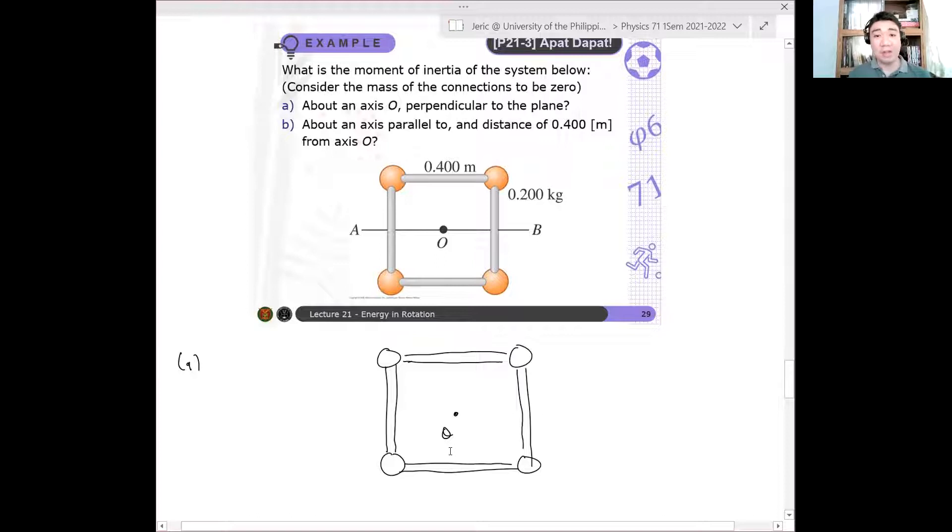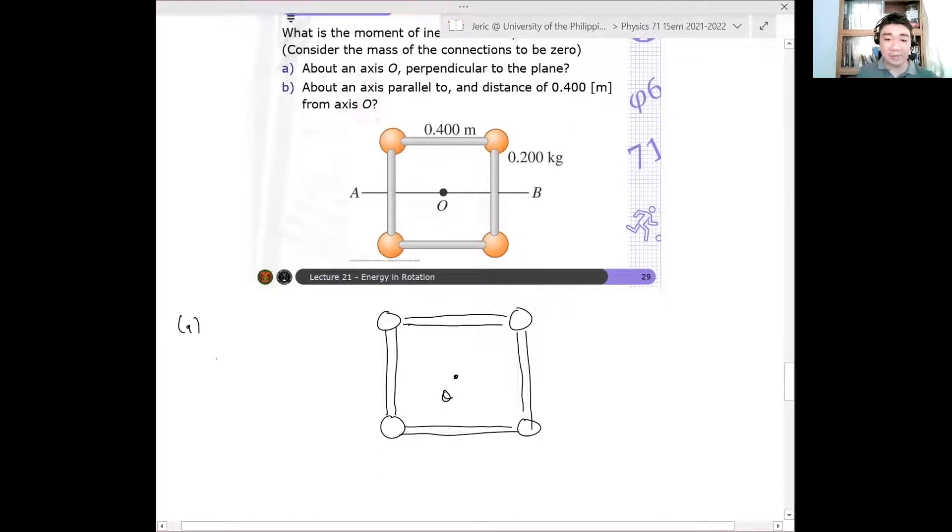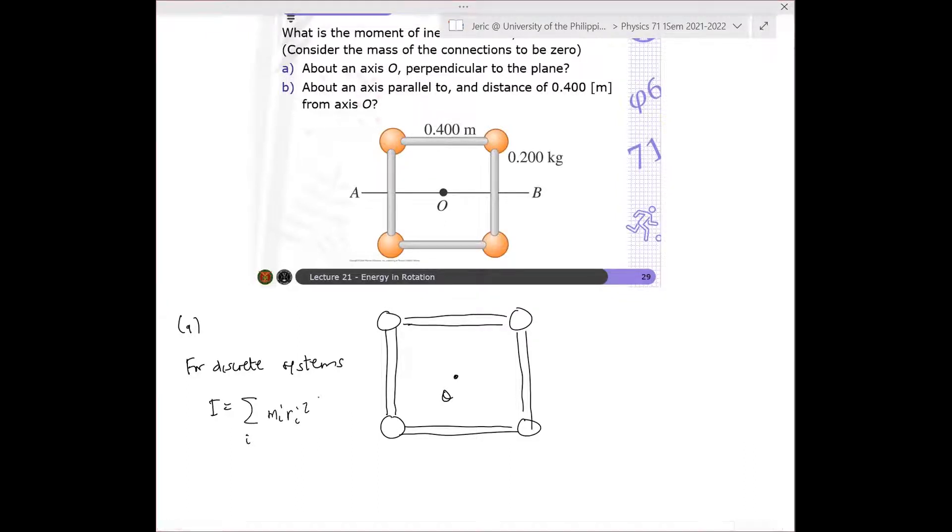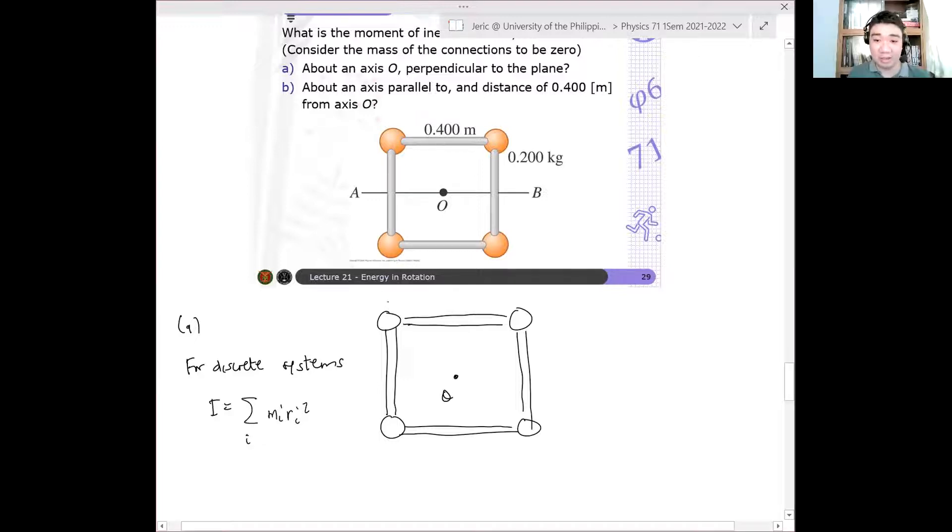Now, remember, for discrete systems, ano'y formula for moment of inertia? For discrete systems, ano'y yan? This is summation over I, M_I, R_I squared. Tama? For continuous, that's the integral. We're not talking about integral now. Don't worry. So discrete lang tayo.